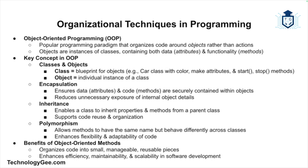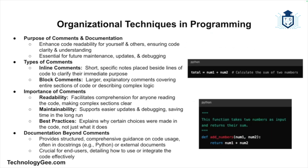Now let's look at comments and documentation. Writing code is only part of the job — it's equally important to make sure that anyone else, including your future self, can understand what your code is doing. The first type of comment is inline comments, which are brief comments placed next to lines of code to explain their purpose, such as 'calculate the sum of two numbers.'